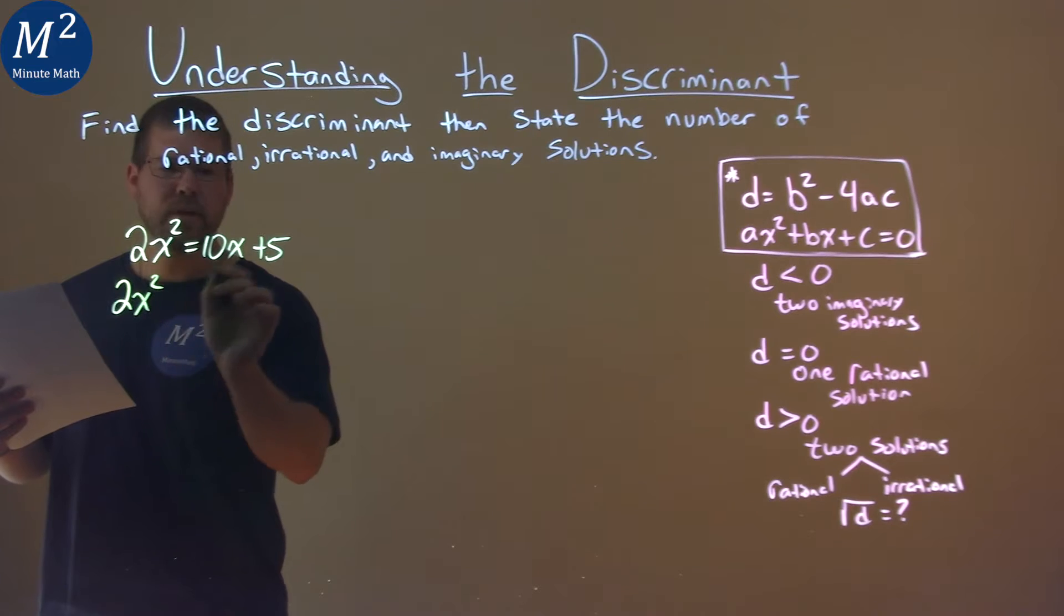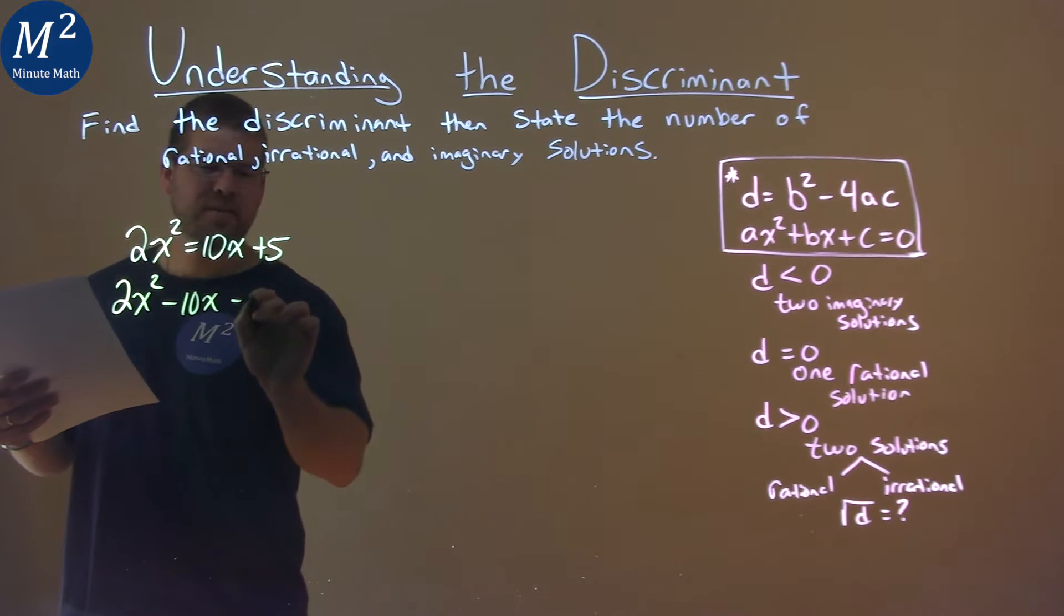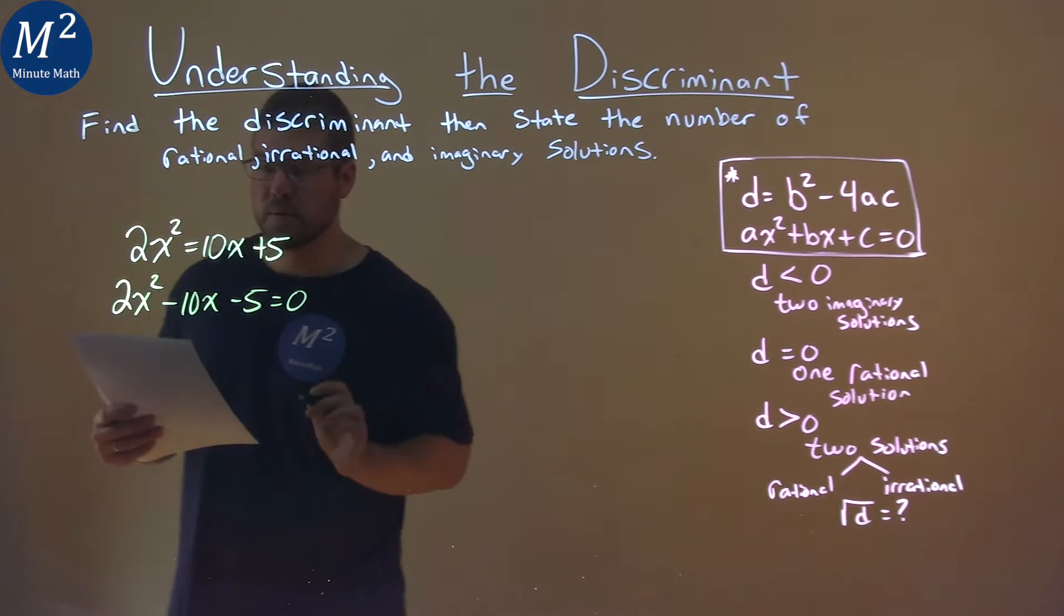So we have 2x squared here, and then subtract 10x and subtract 5, and now it's equal to 0.